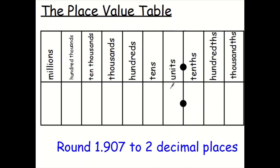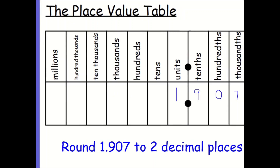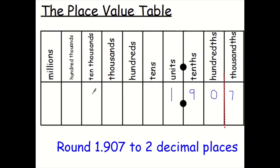And this one: 9.07 — apologies, 1.097 — to two decimal places. I only want two things after the decimal point. Does this 7 affect the 0? Yes, it's five or more, so it lets it soar up to 1.91.